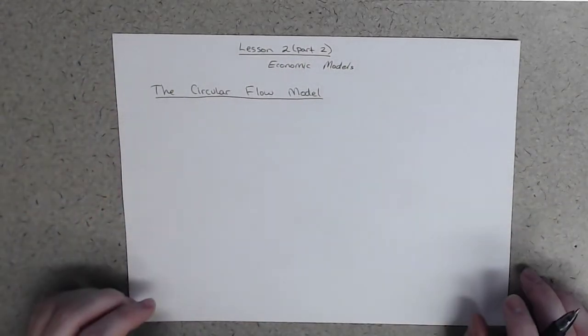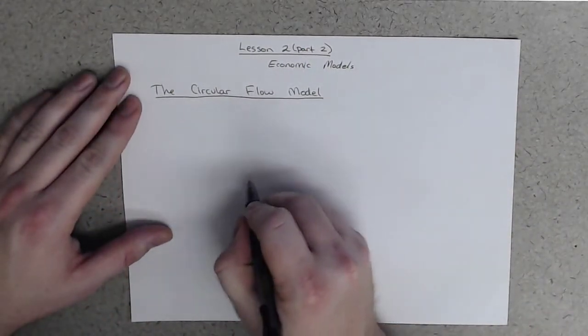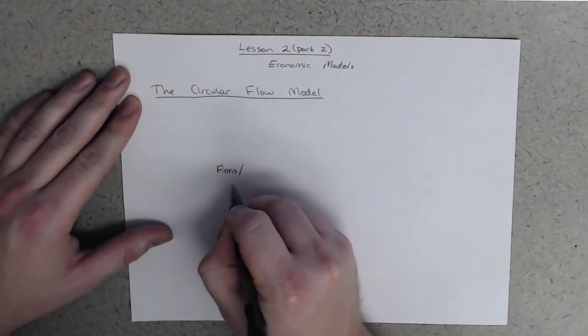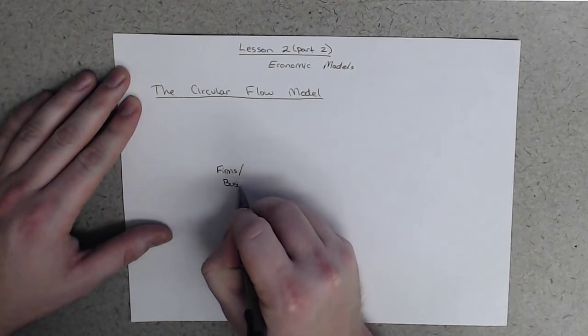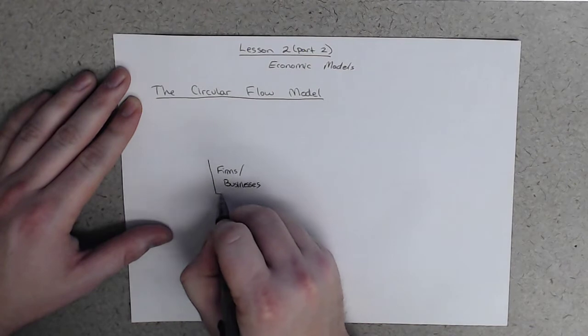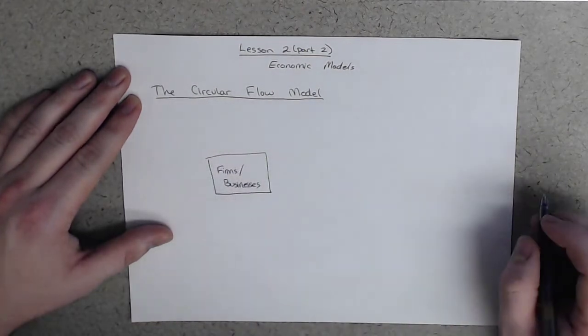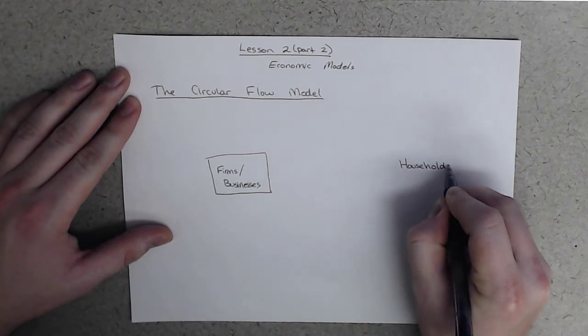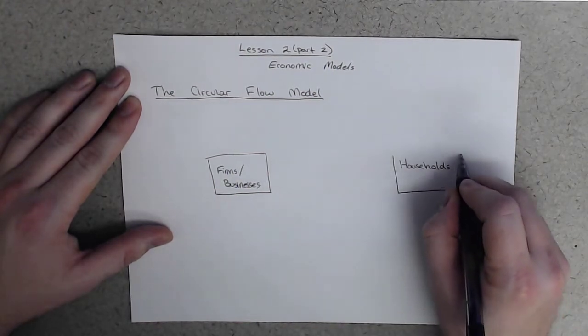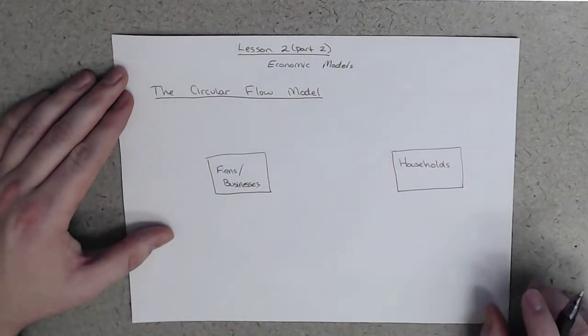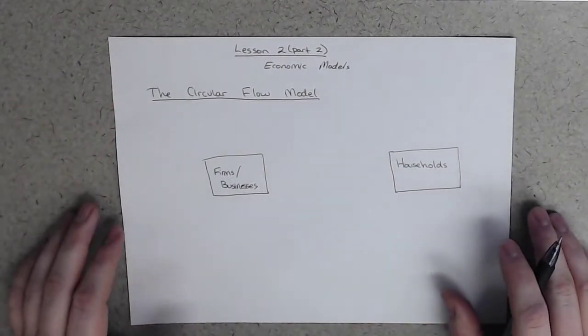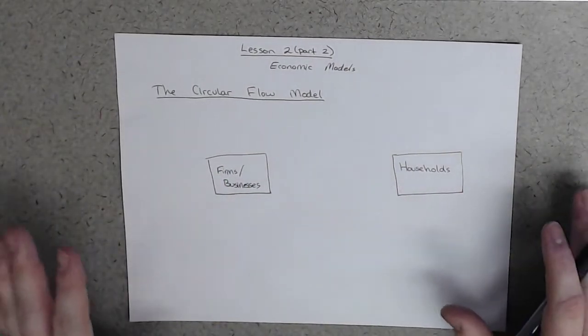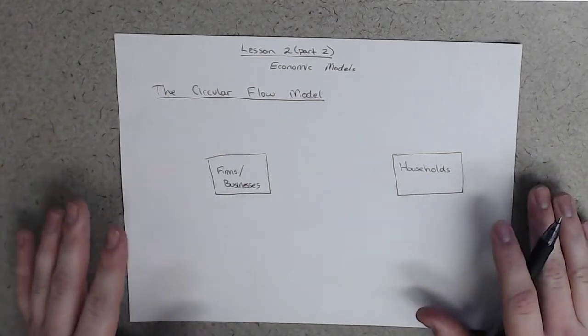But I think you'll be shocked to see just how accurate even this simple model is. And so what we have is we're going to divide the world into two groups. We can call them firms or businesses. I'll put them in their own box. And we also have households. I'll put that in a box as well. And so all people are either working in a business or they're in their household. That's it. That's all we're saying. So already we've simplified the world dramatically.